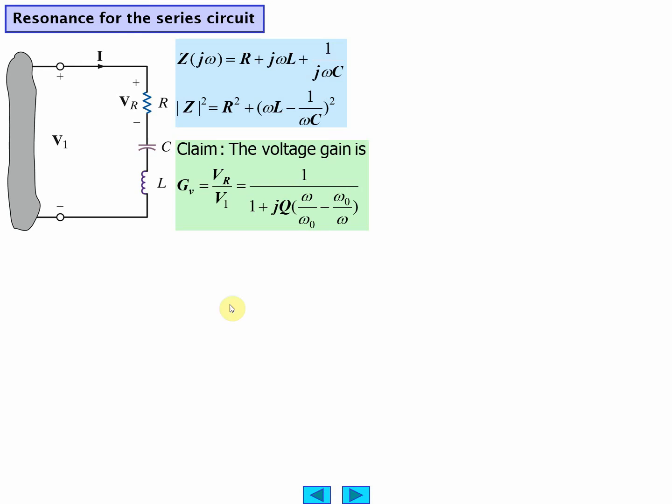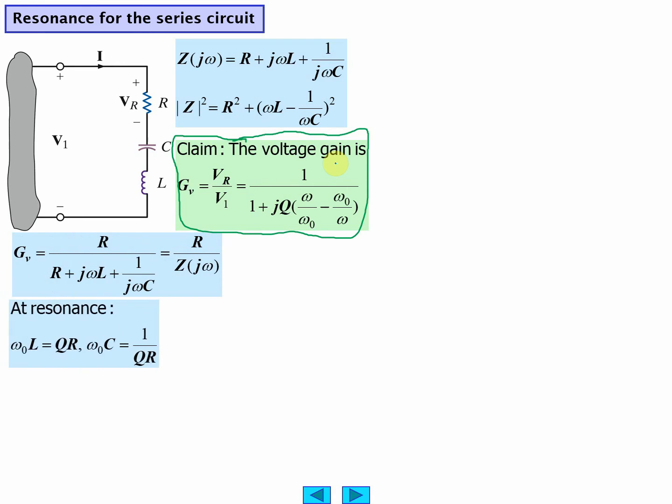Okay, we're going to talk some more about this circuit here, and there's a claim that your voltage gain is going to be this much. So we're going to go through and prove it. We can write down the voltage gain is going to be the resistor value divided by the total impedance.